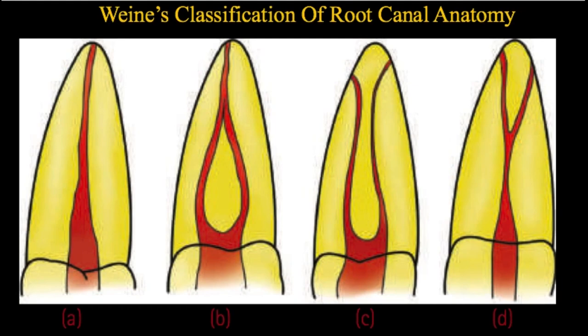Weine classification is simpler: Type 1 is one orifice and one canal exiting at one apical foramen. Type 2 is two orifices where the canals merge and exit at one apical foramen. Type 3 is two separate orifices exiting at two different apical foramina. Type 4 is one orifice exiting at two different apical foramina. These are the basic types of root canal configurations.